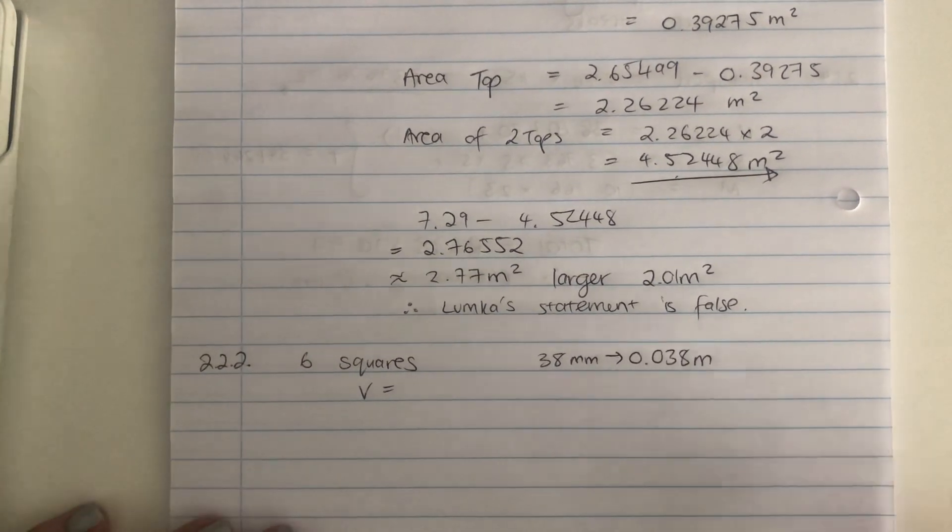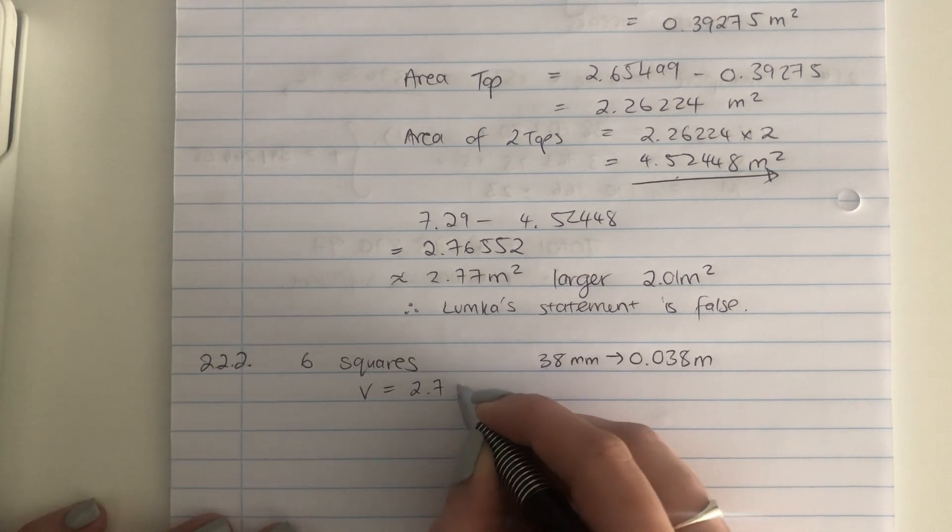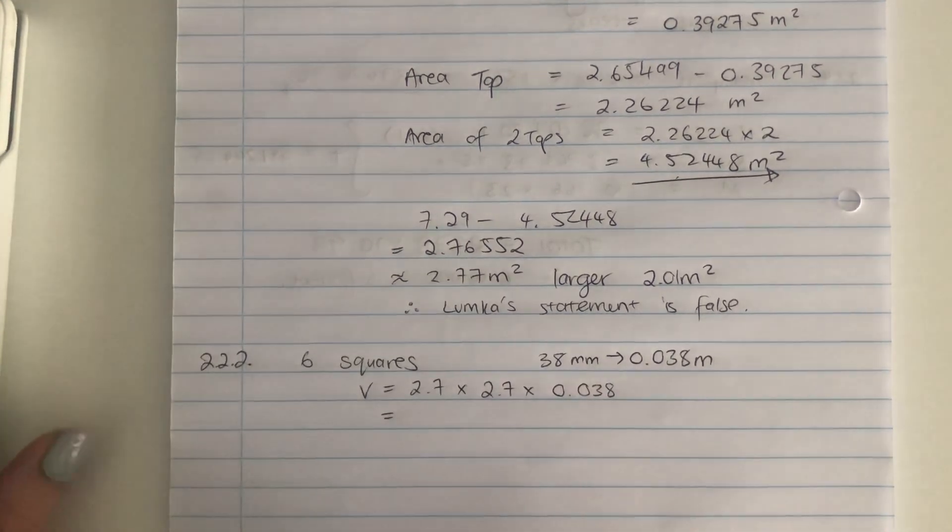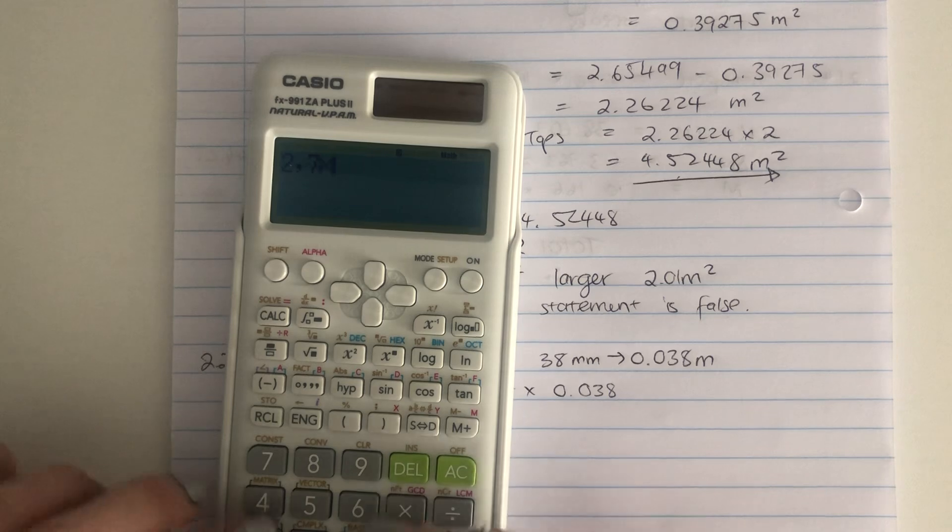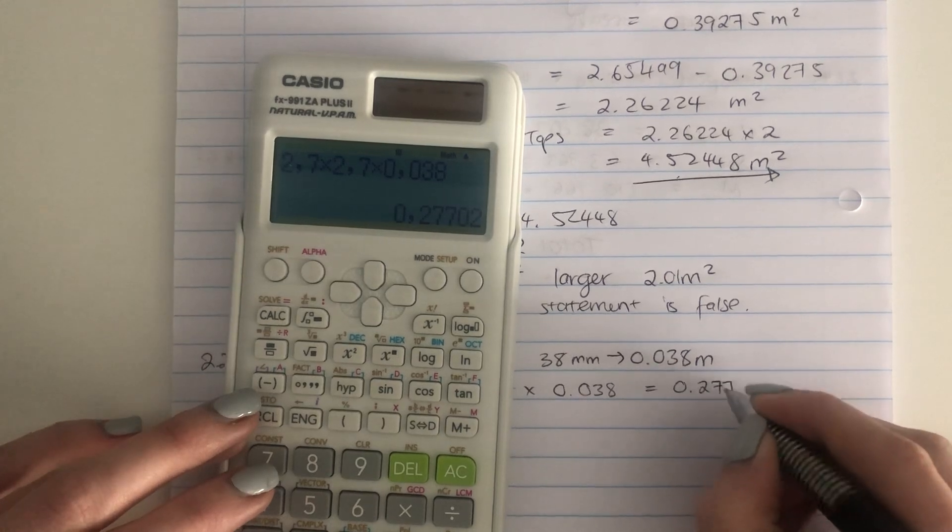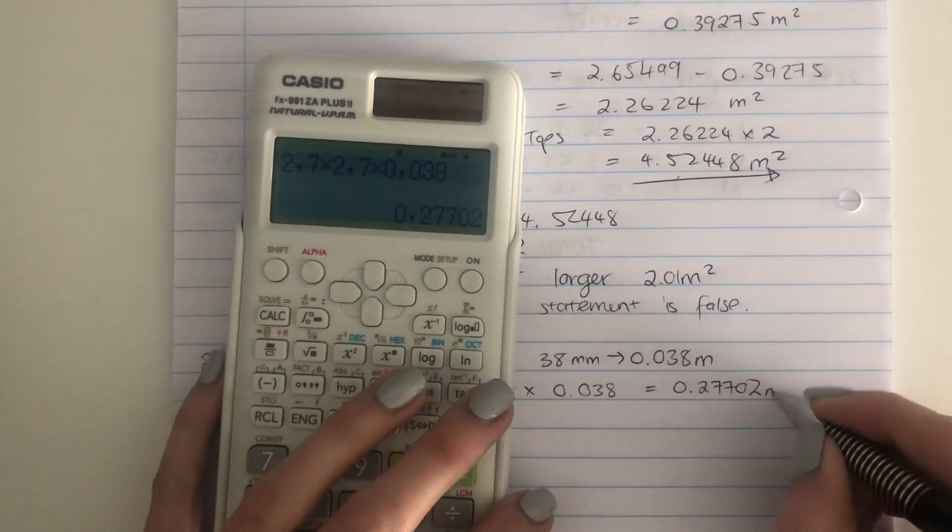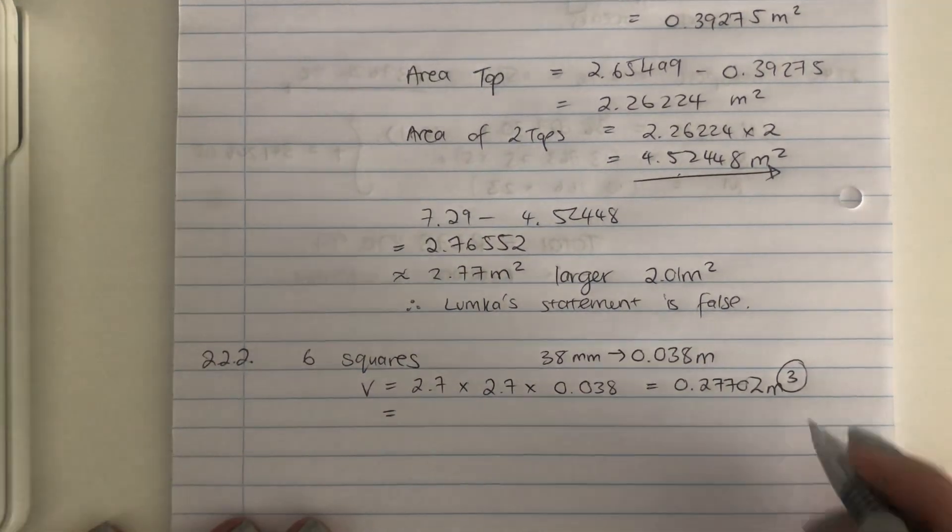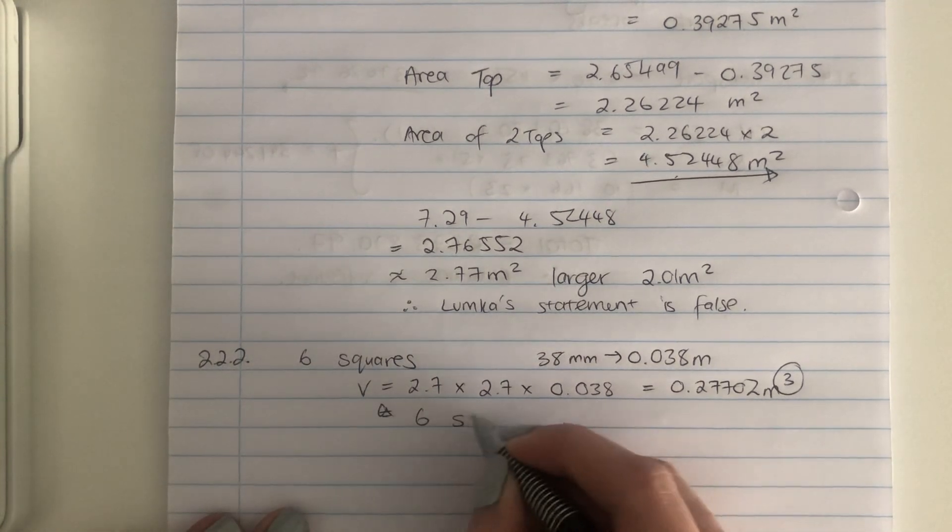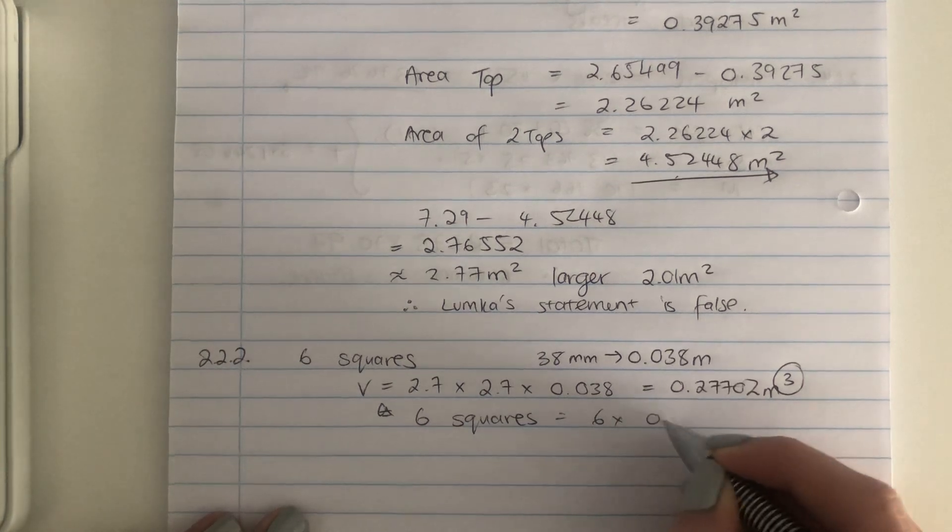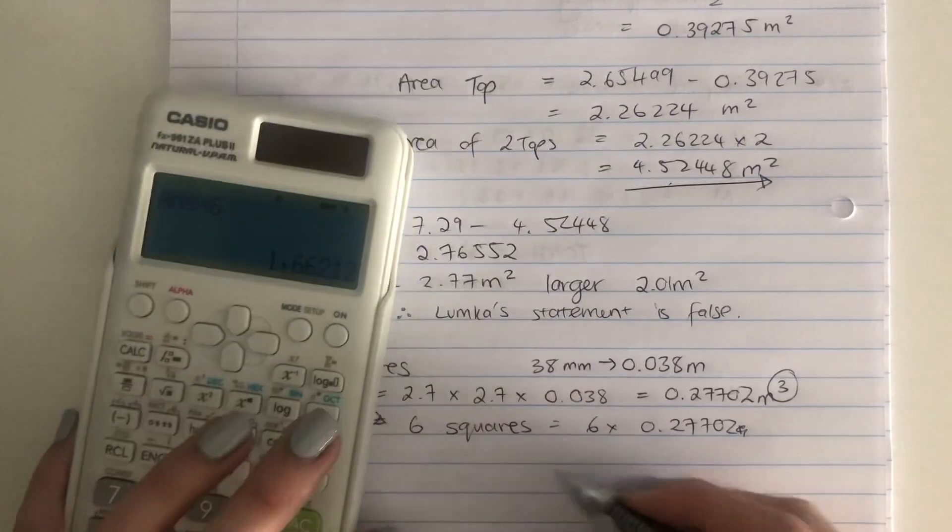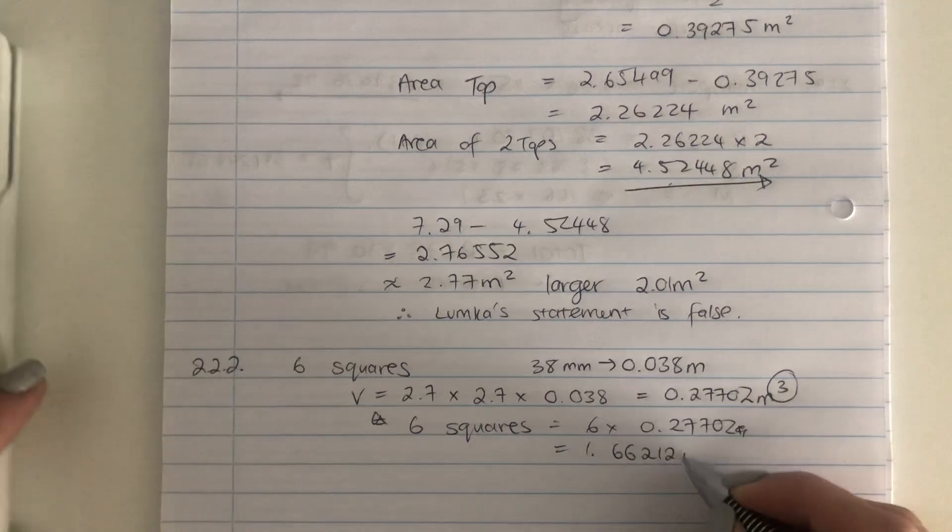Now we have everything we need. So we're going to say 2.7, that's its length, times 2.7, that's its height, times 0.038, which is its width. Put that into your calculator. I think what a lot of students would have done here, which you have to be careful of, is they would have just said, oh, okay, I'm just going to use my answer from the previous question and just do it with regard to area. But it's not with regard to area. It's with regard to volume. And please remember volumes to the power of 3. So we've got the volume there. But now we need for 6 squares. So 6 squares is going to be 6 times that amount. Times your answer by 6. And you're going to get 1.66212 meters cubed. That's what we need.